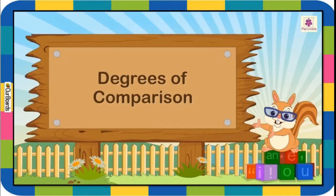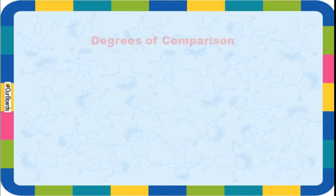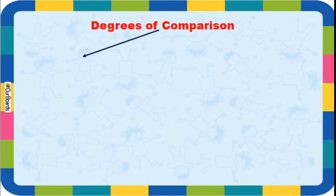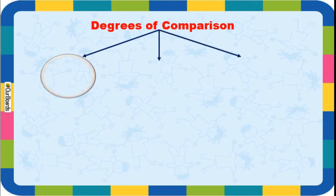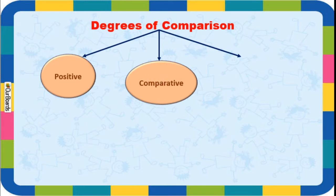Today we are going to learn about degrees of comparison. This is the grammar part and it is very, very important. Please give more attention towards this. Degrees of comparison - students, there are three types. Number one: positive degree. Second: comparative degree. Third: superlative degree. Remember these three types: positive degree, comparative degree, and superlative degree.